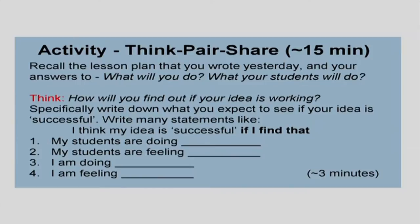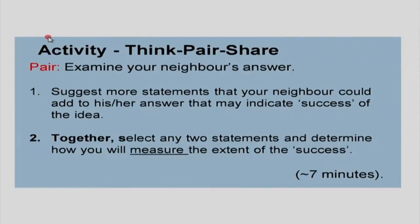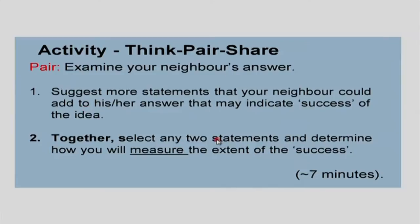If some ideas you wrote are not measurable, you can go back and change them. We are getting towards a more systematic, scientific data collection and evidence procedure. For example, saying that my students are feeling happy is not a measurable quantity. Saying students are doing well is not precise enough. So first write down statements, then select any two which have some measurability, and determine how you will measure the extent of success. This is the most important part of writing your research questions — do it carefully.